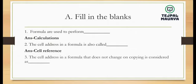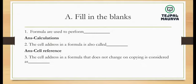The cell address in a formula that does not change on copying is considered as — the answer will be 'absolute cell reference'.